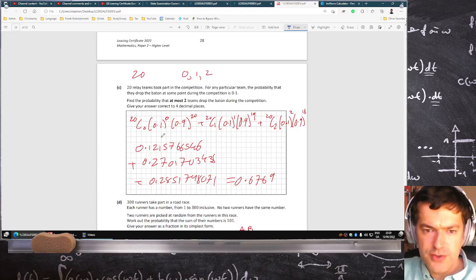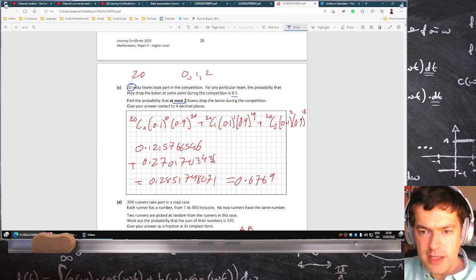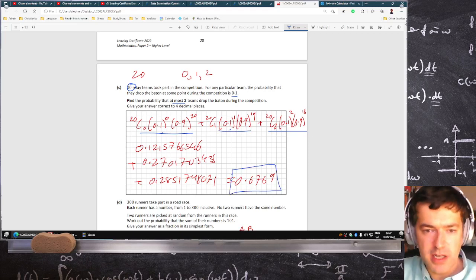This one here is a Bernoulli trial where you have 20 people, and the probability of dropping is 0.1, and you want at most two teams to drop. So it's zero teams drop, or one team drops, or two teams drop. So when you bash that in on the calculator, you'll get this number here.